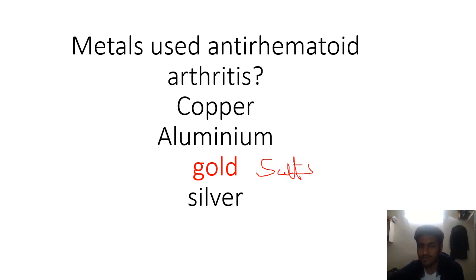The metal used in rheumatoid arthritis - obviously gold salts. Widely used. I hope there is no doubt. Gold salts are used as anti-rheumatic agents.